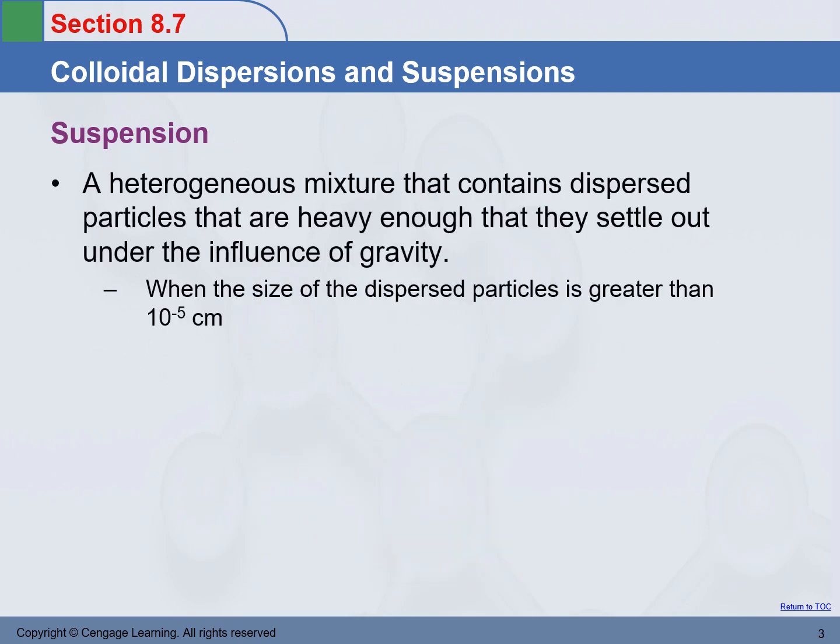Suspension. Now the particle size in the mixture is getting even bigger — big enough to be seen by human eyes. The mixture becomes a heterogeneous mixture that contains dispersed particles heavy enough that they settle out under the influence of gravity. The particle size is so big that it is a heterogeneous mixture; it is not homogeneous anymore. Given time, those particles will settle out.